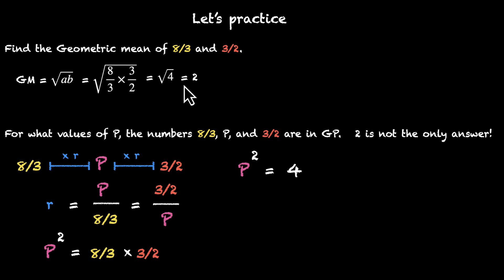Pay very close attention to both these equations. The first one says, give me the square root of 4. And the answer to that is 2. But the second one says, find a number that when squared gives us 4. And here we have two values. We can either plug in 2 or we can plug in minus 2. So P could be 2 or minus 2. And this is our second answer. Sure, 2 is our geometric mean and minus 2 is not. But both of them can be used to form a GP.